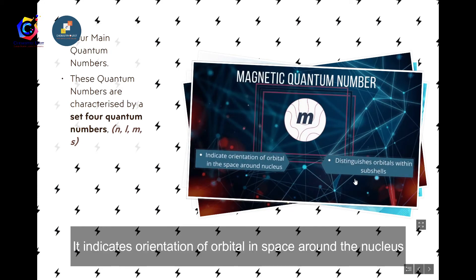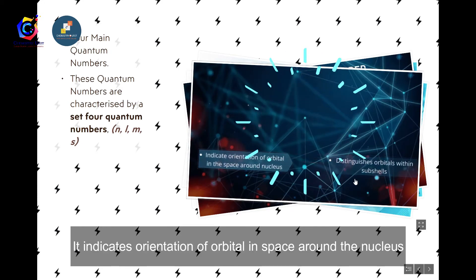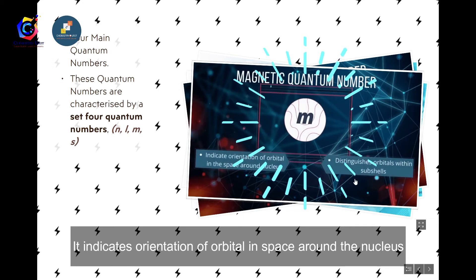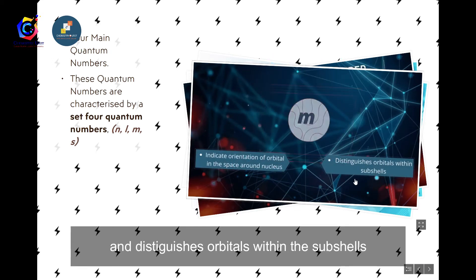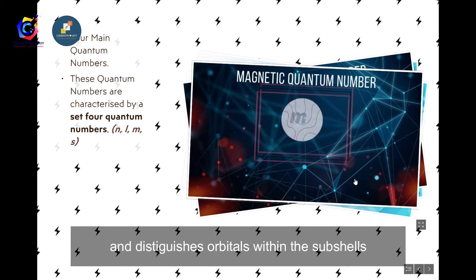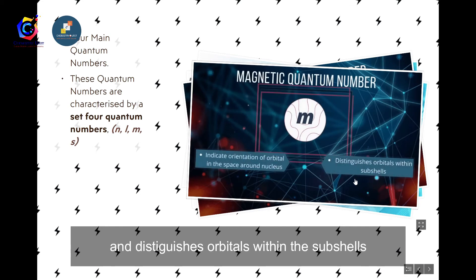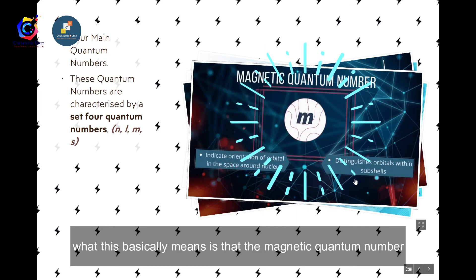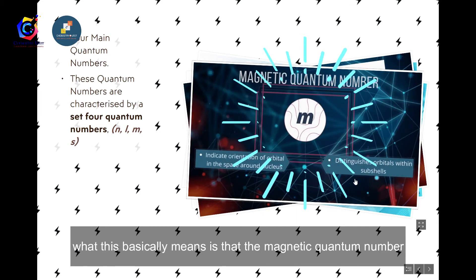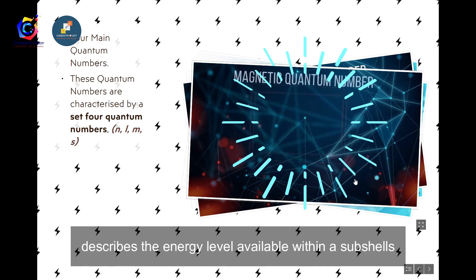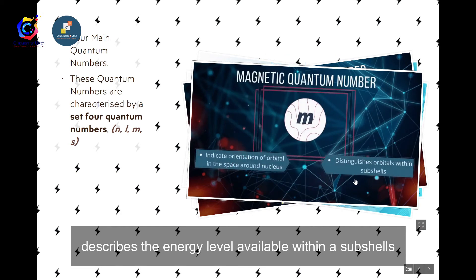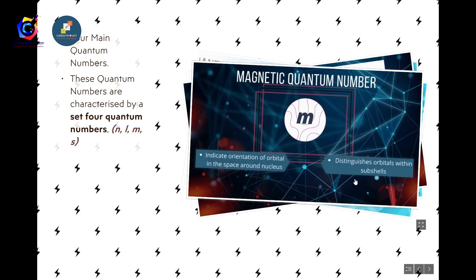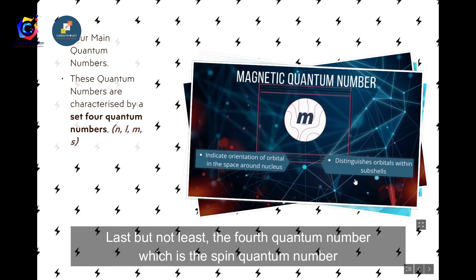The magnetic quantum number (m) indicates the orientation of the orbital in space around the nucleus and distinguishes orbitals within subshells. Essentially, it describes the energy levels available within a subshell.